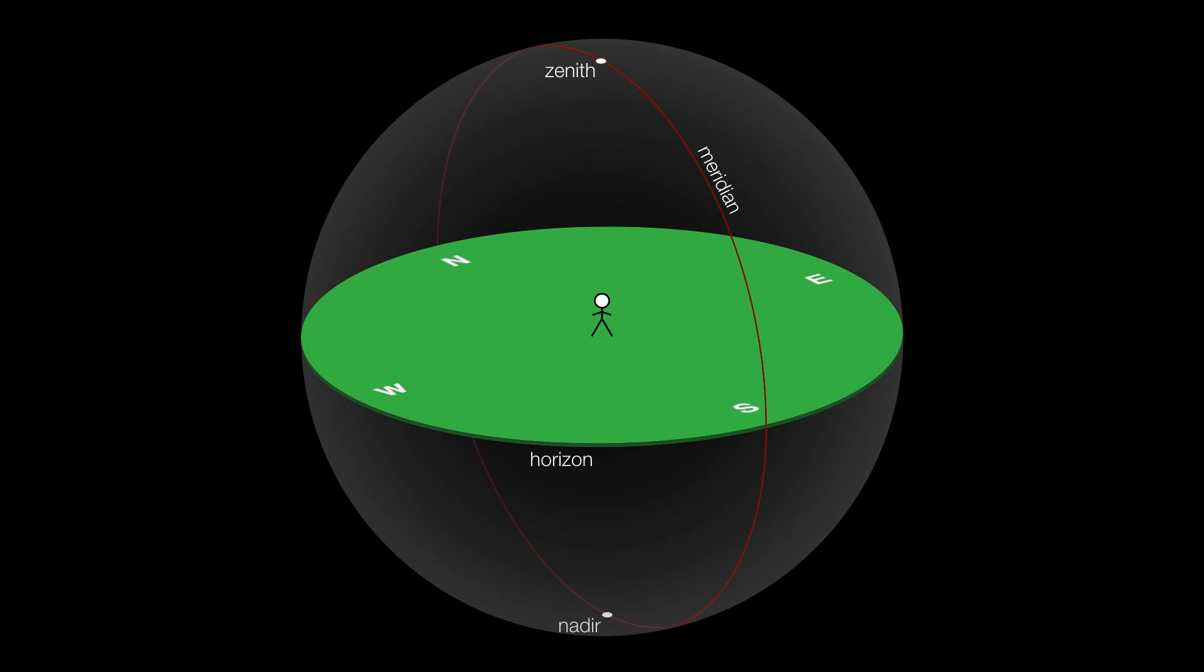If we wanted to describe the position of a star in the sky from our location in the field, we can use two simple coordinates to do that.